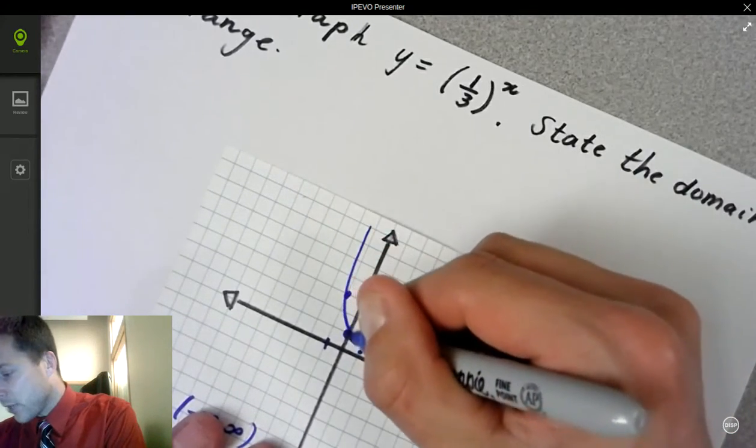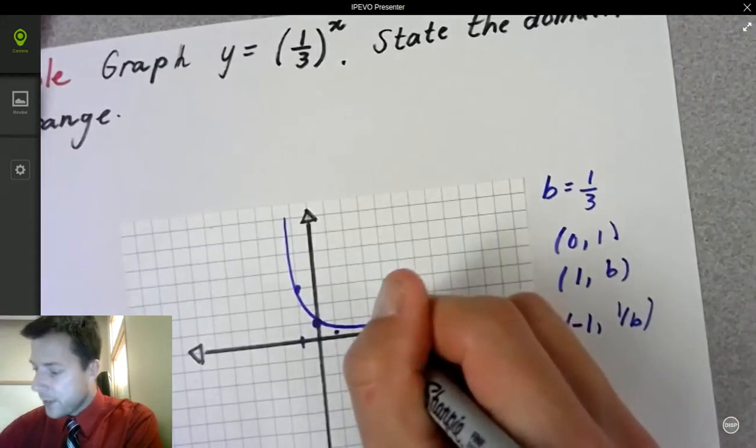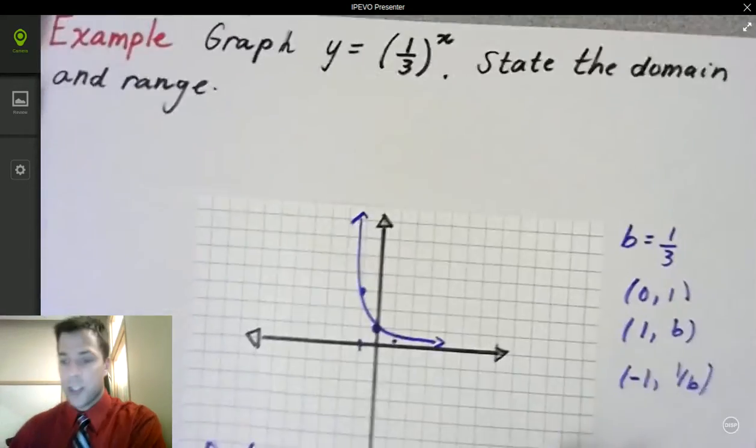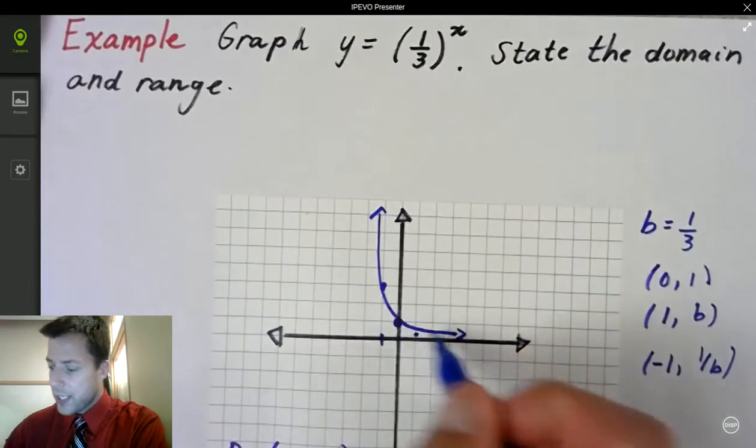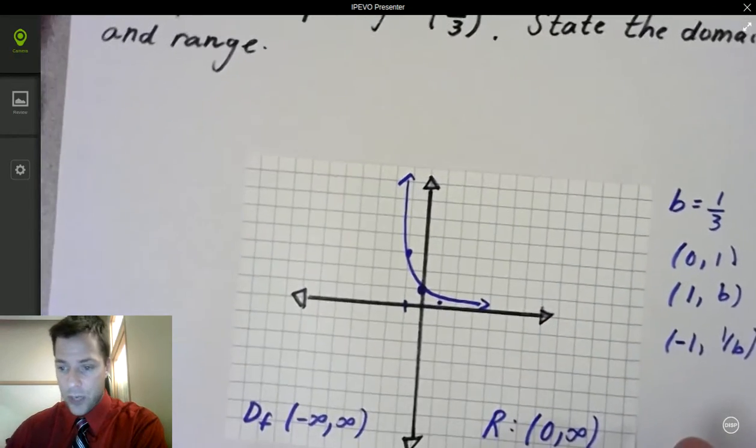I'm going to just turn it so I can try to do this a little more accurately. There's our graph of our exponential function, y equals 1 third to the x.